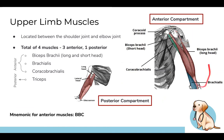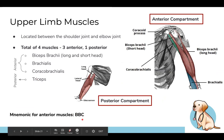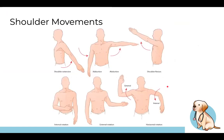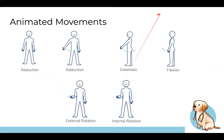Arm muscles span from the shoulder joint to the elbow joint — four in total: three anterior, one posterior. A mnemonic for the anterior ones is BBC: Biceps brachii (with a long head and short head), Brachialis, and Coracobrachialis. On the posterior side there's just the triceps.